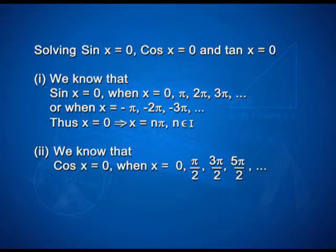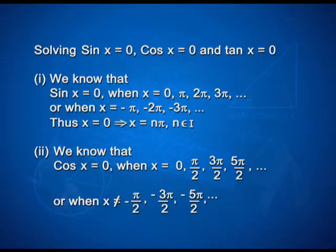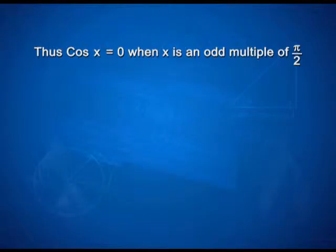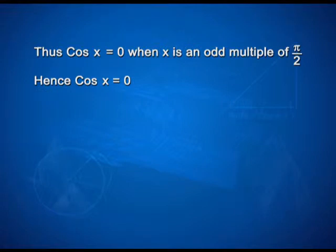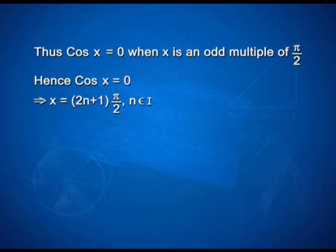Similarly, for cos x = 0, this holds when x is equal to 0, π/2, 3π/2, 5π/2, and so on, or when x is equal to −π/2, −3π/2, −5π/2, and so on. Thus, cos x = 0 when x is an odd multiple of π/2. Hence, cos x = 0 implies x = (2n+1)π/2, where n belongs to the integers.